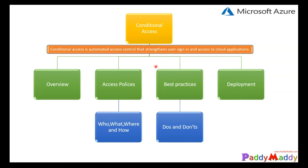Conditional access is also not considered your first line of defense for scenarios like DDoS or denial of service attacks. However, the information gathered from sign-in events — such as login risk, location, and other criteria — can be pulled from logs to further harden your environment and set access policies based on conditions.